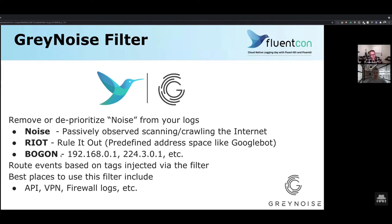We want to route these events based on tags injected via the filter itself. Those categories we're getting back — we've extracted an IP address from a log and now want to route that specific event based on tags we've injected via the filter. The best place to use this sort of filter is on a public-facing asset where you have global inbounds allowed — an API, VPN, or firewall — where you have a lot of noise and want to filter it down to determine what things are targeted threats.